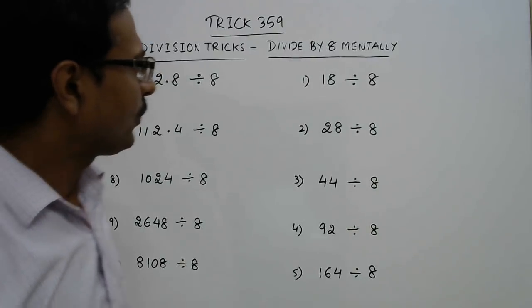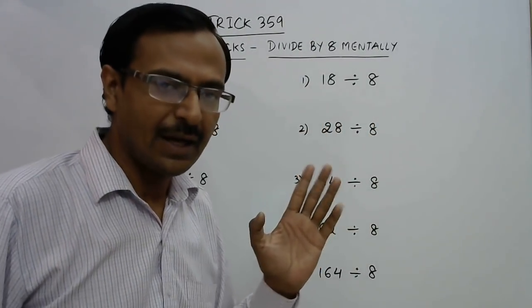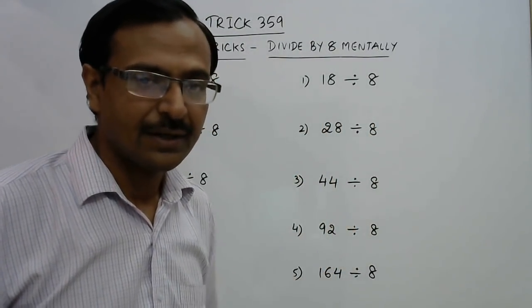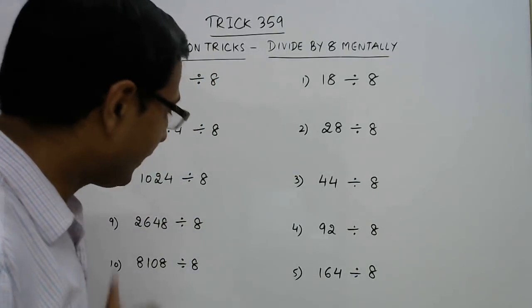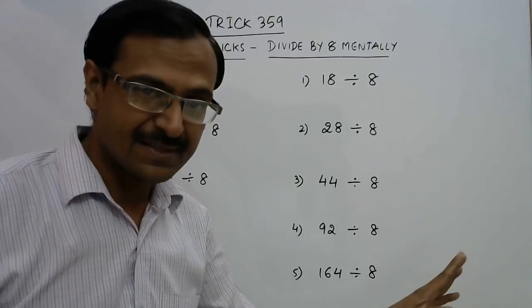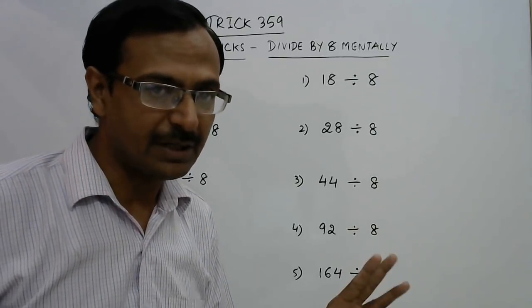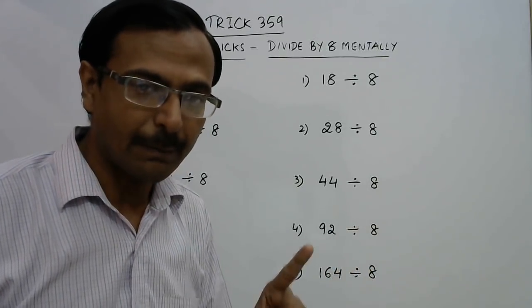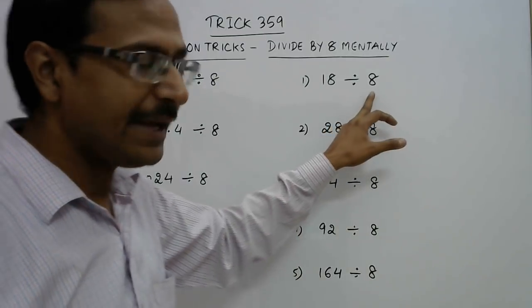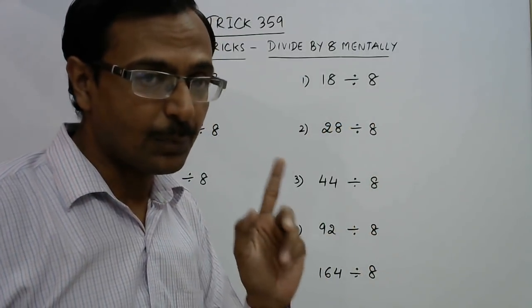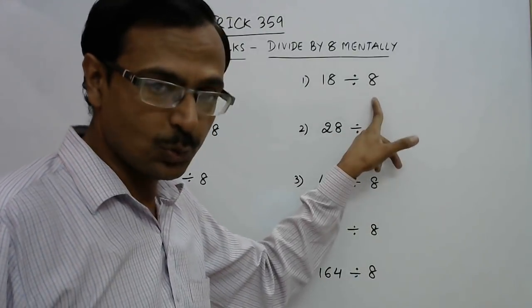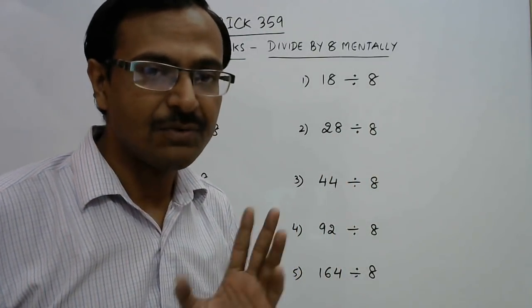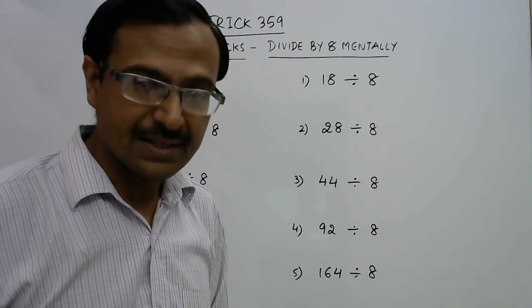Now if you consider this 8 as a single digit, then there is a problem because the division will involve a lot of steps. Long division method might prove time consuming here. But when you consider this 8 as a product of three 2s, that is 2 into 2 into 2, then you should understand division by 8 as dividing by 2 three times.